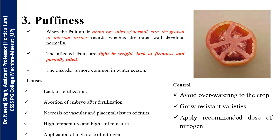The third disorder is puffiness. In puffiness, the tomato cannot achieve normal growth and remains hollow from inside. The tomato looks very light — when you pick it up it feels very light. Symptoms include lack of firmness and a parsley-like feel. The seeds and pulp inside are not properly developed. This disorder is very common in the winter season. The main cause is lack of fertilization or pollination; even if pollination occurs, the embryo does not develop. Management: avoid over-watering, grow resistant variety, and apply recommended dose of nitrogen.